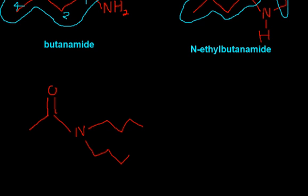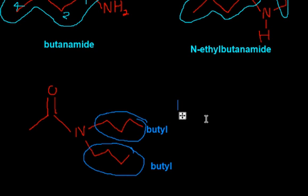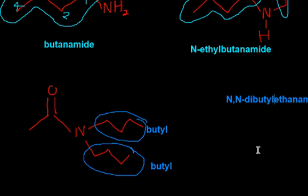How do we name this? First, identify your substituents. Remember, whatever comes off of the nitrogen is a substituent. You can see they both have one, two, three, four carbons — so this one here is a butyl, and this one here is a butyl. And what we have over here is two carbons, so that's going to be an ethyl. You name that as your main chain, so it's ethanamide. Then you go and name your two substituents: N,N-dibutyl ethanamide.